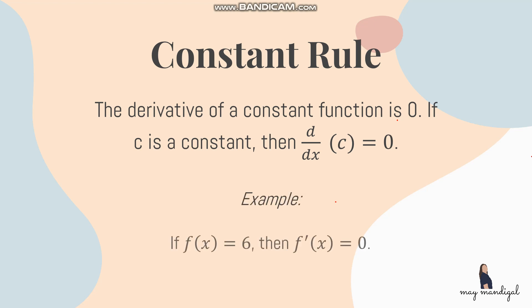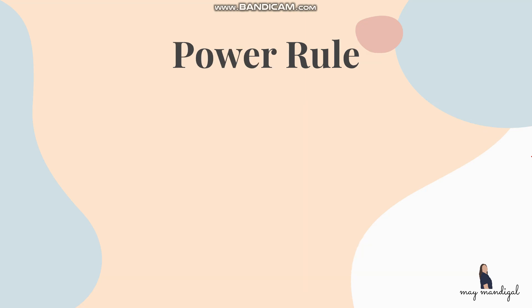For example, if f of x equals 6, then f prime of x is 0. And if y equals 24, then y prime is also 0. So just remember: if you have a constant and want its derivative, it is automatically 0.